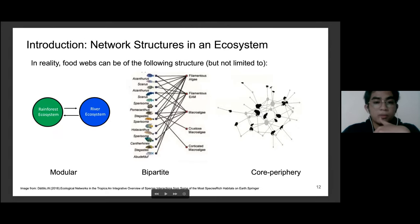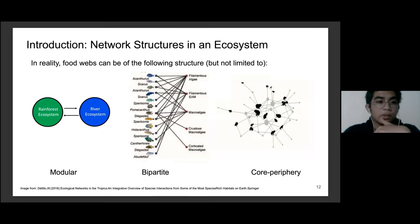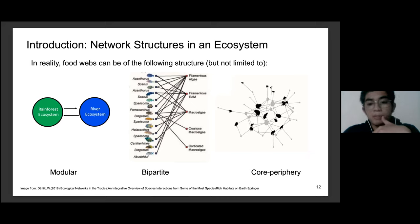In reality, ecosystems exhibit various interesting structures. A modular structure occurs when, for example, a river ecosystem and a rainforest ecosystem each have strong internal connections but weaker connections between them. The bipartite structure is the opposite: interaction between communities is greater than within communities. In the extreme bipartite case there is no interaction within communities. A core-periphery structure has one community denser than the other, with interactions between them.